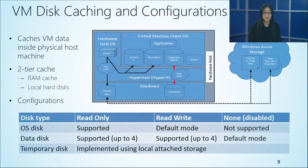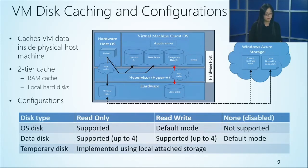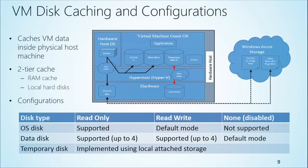In terms of disk caching configurations, they vary depending on which disk we're talking about. The temporary disk is not implemented as a VHD so caching is not applicable there. For the OS disk and data disk, the default caching mode differs. For the OS disk, the default mode is read-write. For data disks, out of the box you'll see that none — no read or write caching — is enabled. This is because for the OS disk we want to gain that performance benefit.